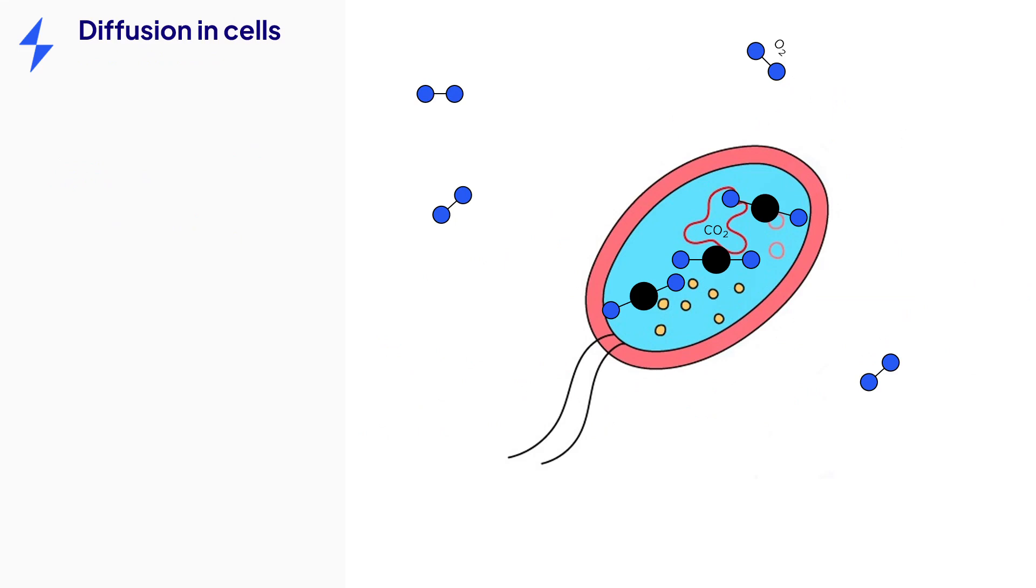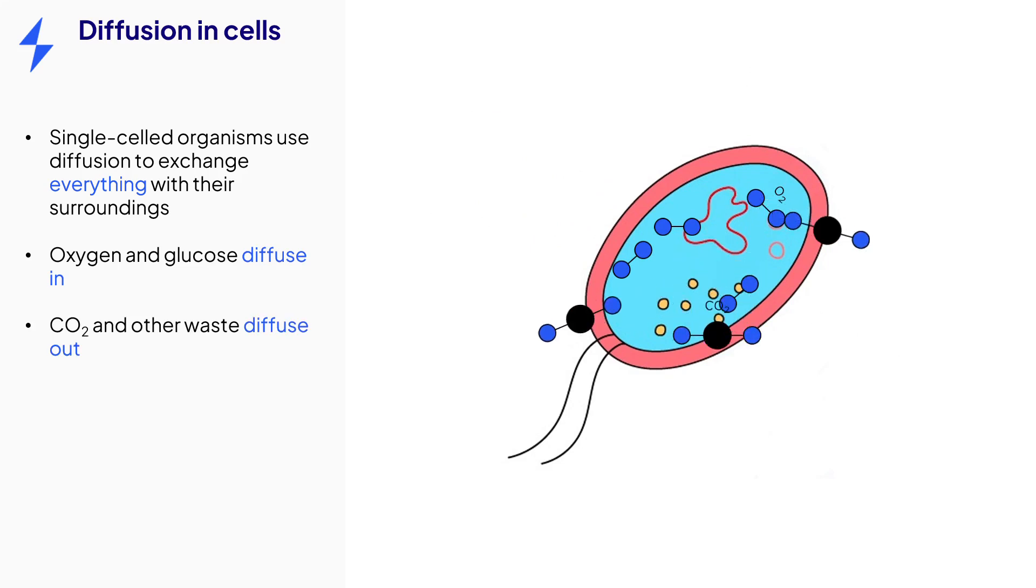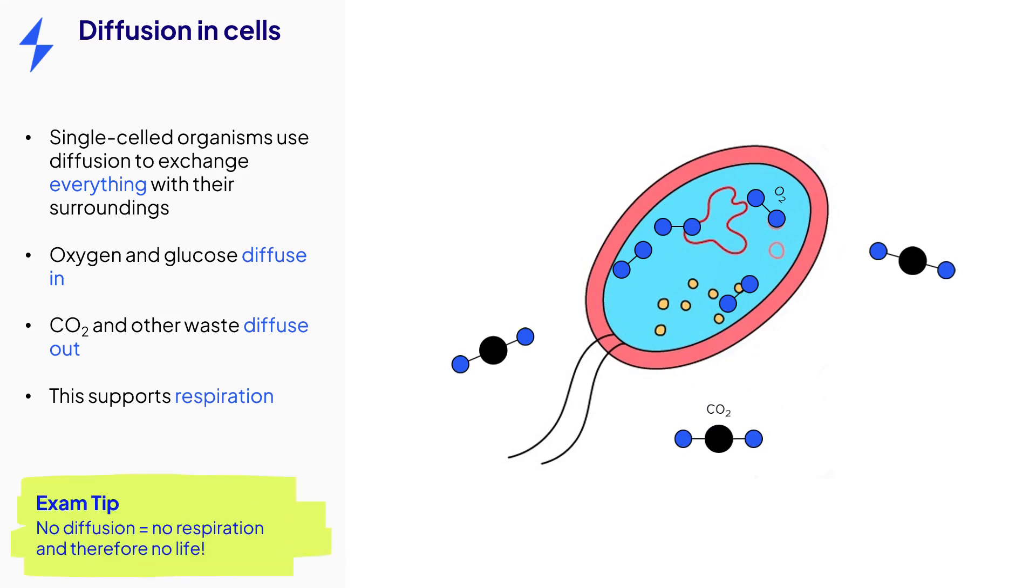Diffusion can also occur across a membrane allowing movement of molecules into and out of cells. Single-celled organisms such as the one shown in this image use diffusion to exchange everything with their surroundings. For example, oxygen and glucose diffuse in and carbon dioxide and waste products diffuse out. This is to support the process of respiration. If diffusion didn't occur, then respiration would be unable to occur and the organism would die.